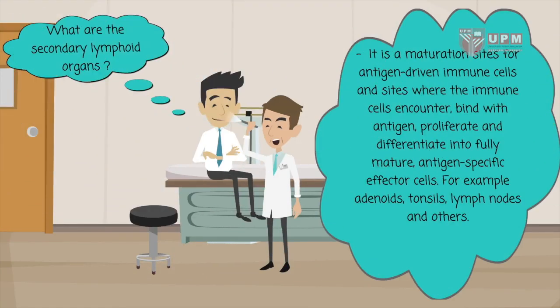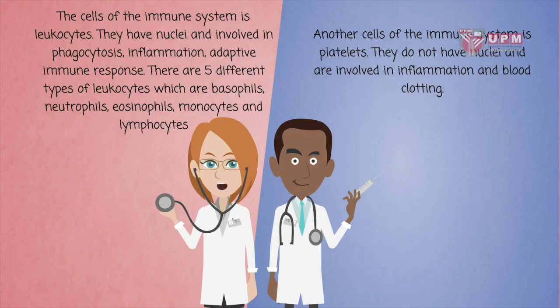Secondary lymphoid organs are a maturation site of antigen-driven immune cells, where immune cells encounter and bind with antigen, then proliferate and differentiate into mature antigen-reactive cells. The main cell of the immune system is the leukocyte.